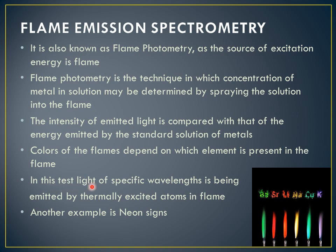In this test, light of a specific wavelength is emitted by thermally excited atoms in the flame. If that falls in the visible range, it appears to us as colored. Another example is neon signs, where neon gas is energized by electricity, and as it returns to the ground state, different colors are produced.